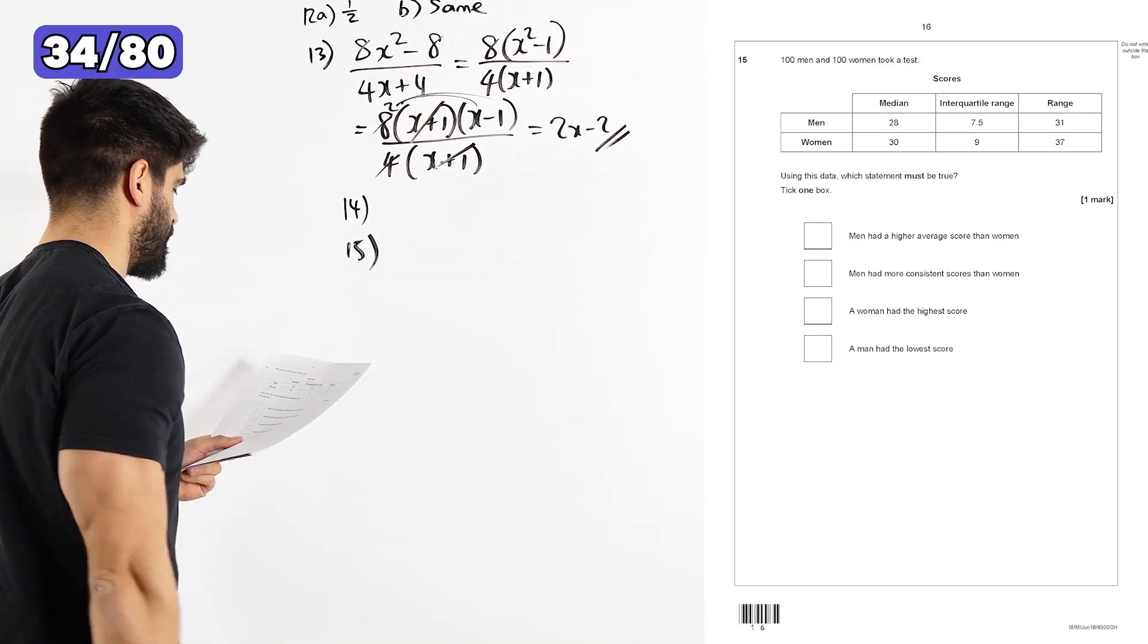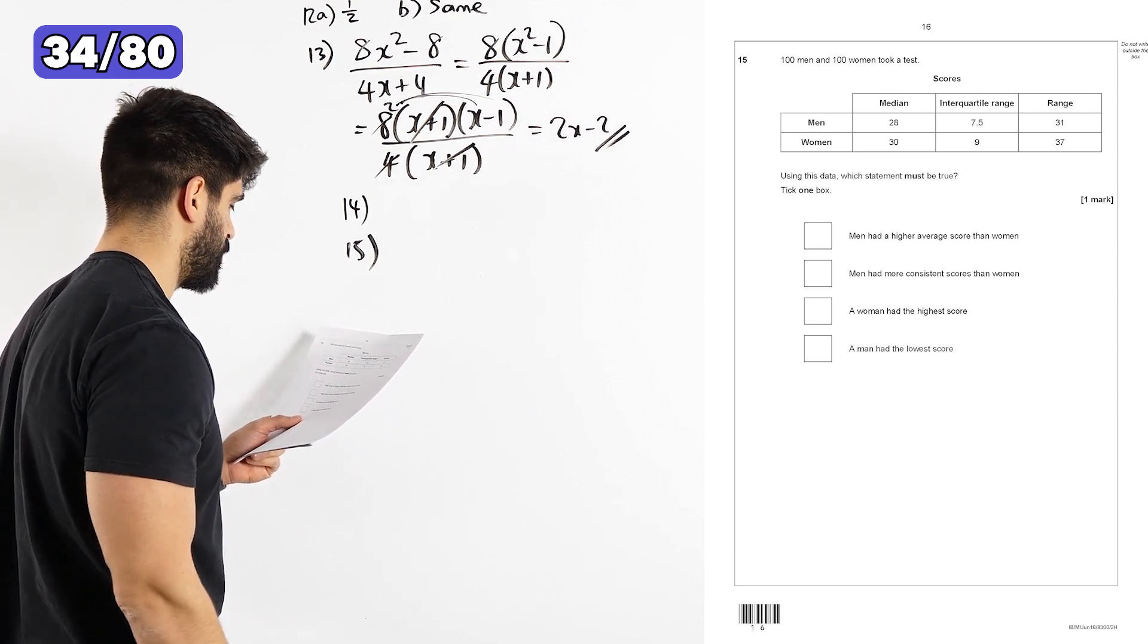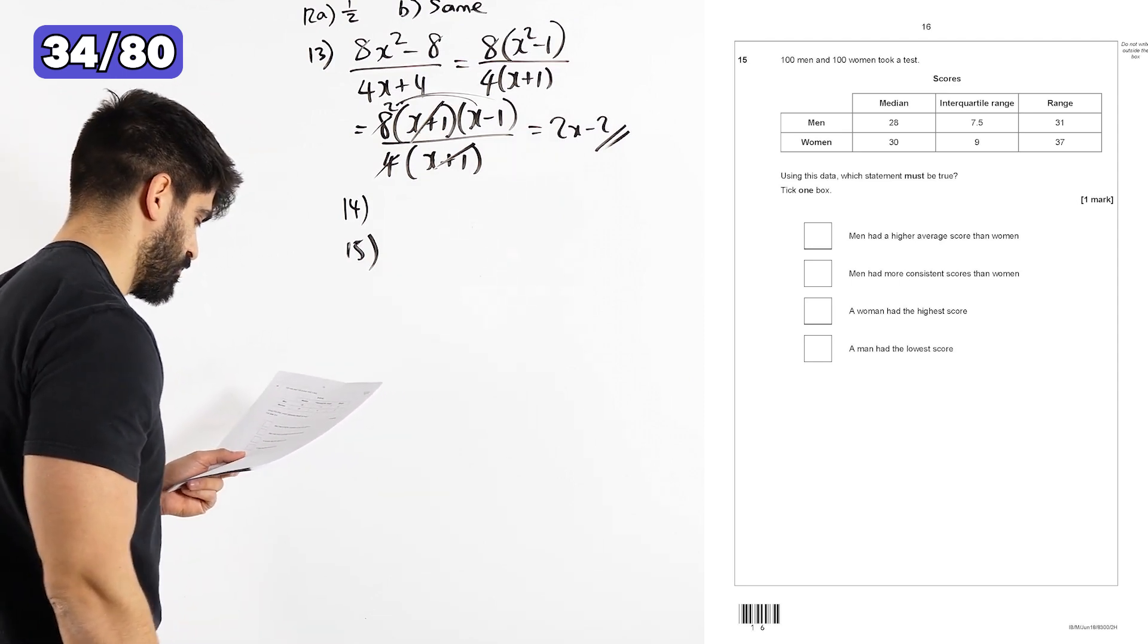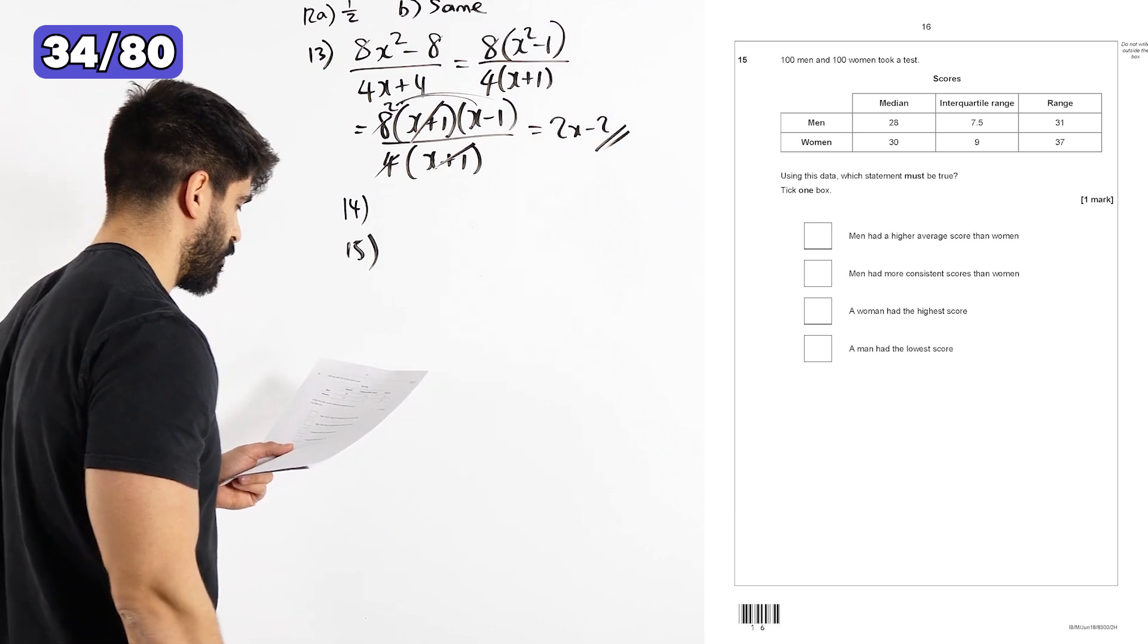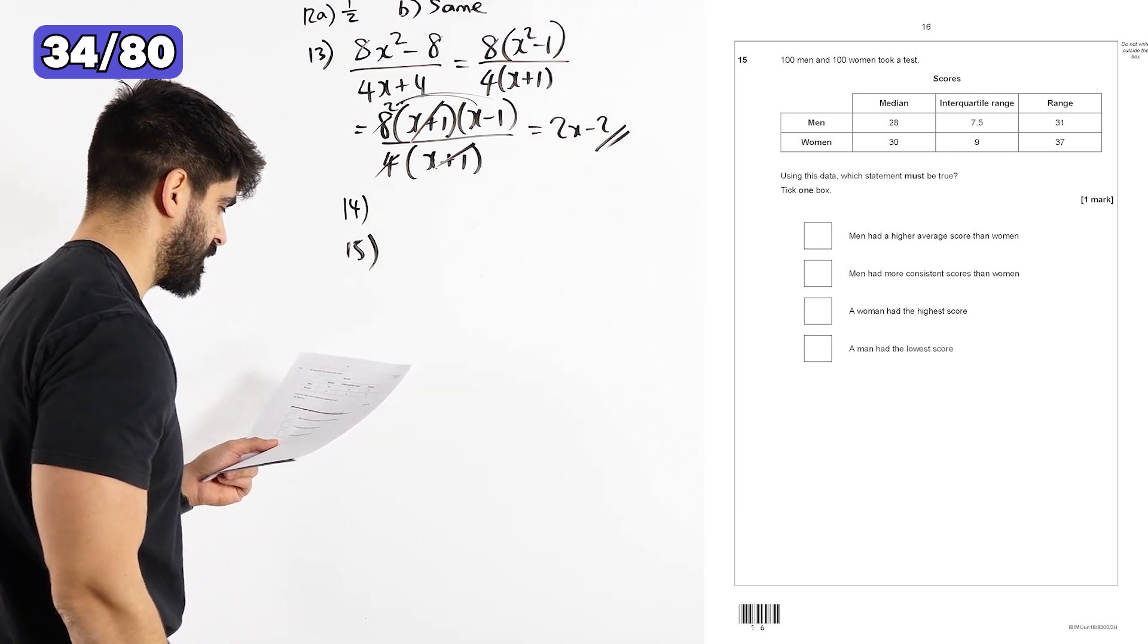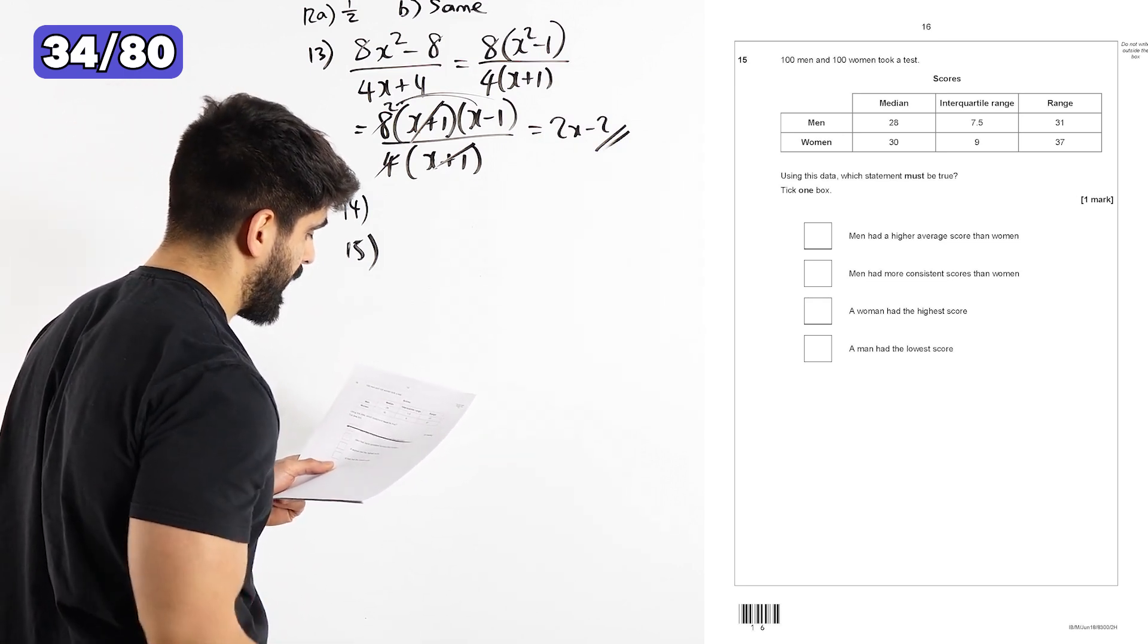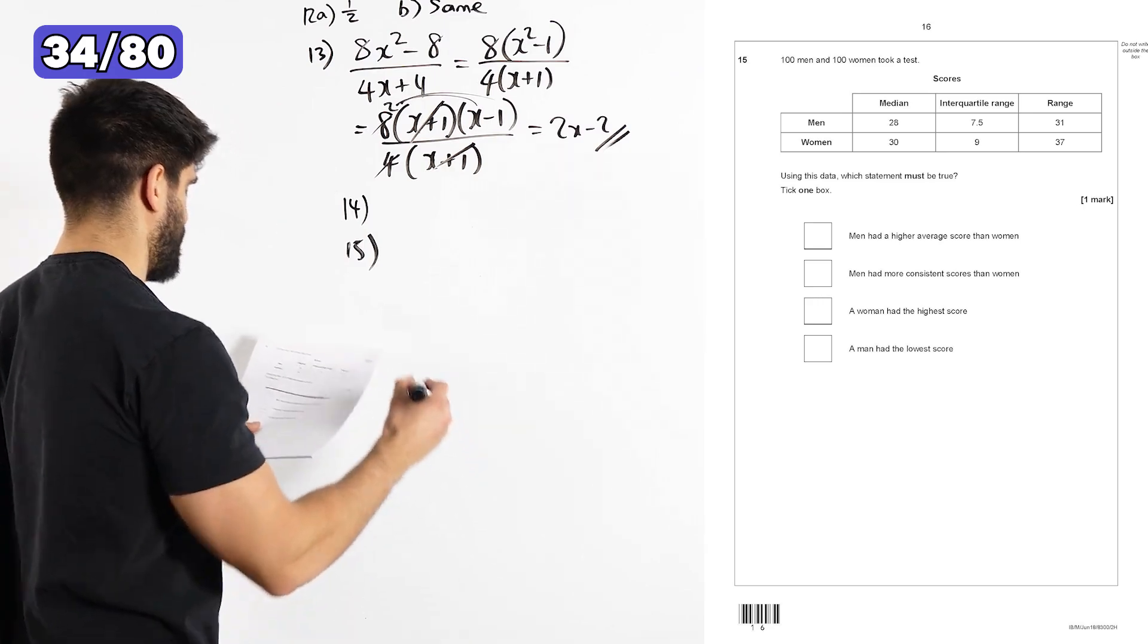Question 15, 100 men and 100 women took a test. Using the data on median, IQR and range, which statement must be true? Men had a higher average score than women. That doesn't make sense because the median was lower. Men had more consistent scores. That's true because their interquartile range is smaller and their range is smaller.